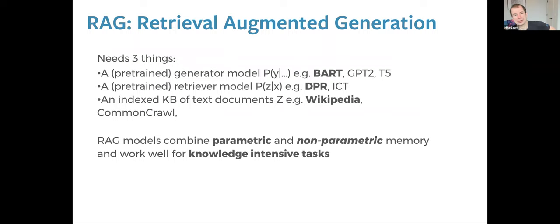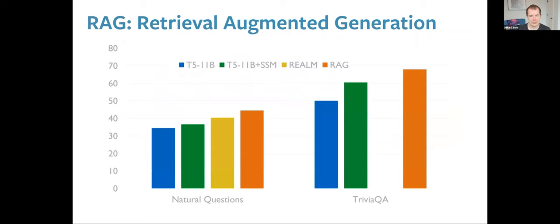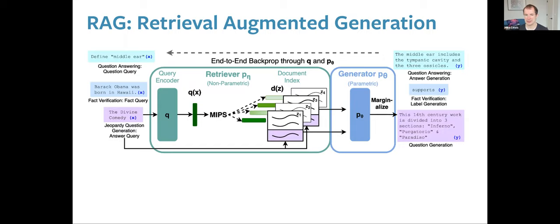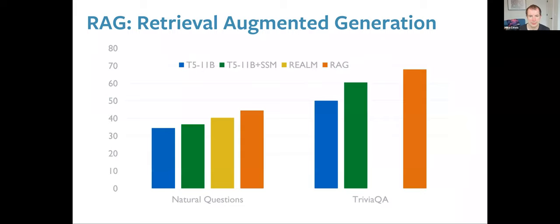We also have work called Retrieval Augmented Generation (RAG), where we do knowledge-intensive text generation by retrieving other bits of text. For question answering, rather than storing the answer in the model, we retrieve relevant Wikipedia text and use that to help generate the answer. Across a range of benchmarks, this approach outperforms work that tries to memorize facts in parameters, giving more evidence that retrieval and non-parametric memories provide a good way to help models with factual knowledge.